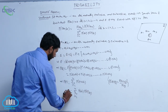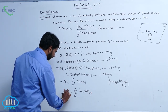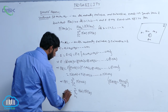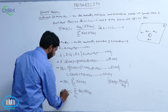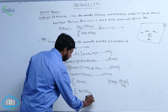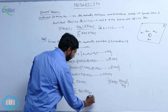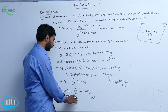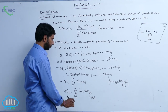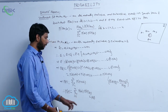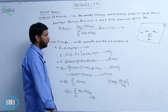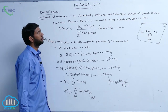Therefore, P(E) is equal to sigma over i equal to 1 to n of P(Ai) times P(E given Ai).